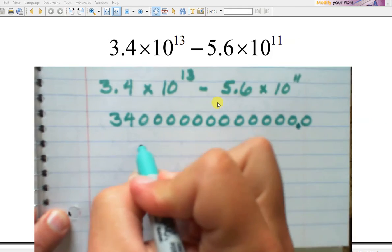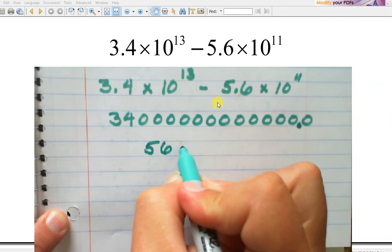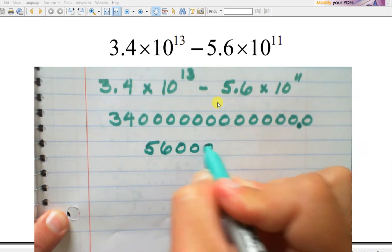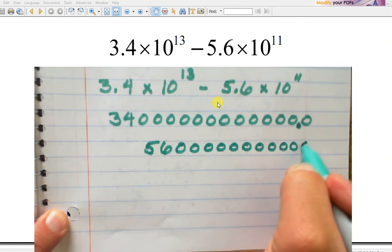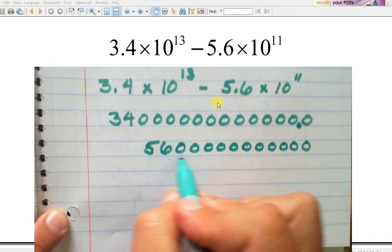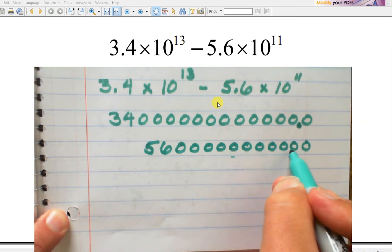I'm not even sure a calculator is going to be able to handle that. Minus 5.6 with 11 zeros. 1, 2, 3, 4, 5, 6, 7, 8, 9, 10, 11. With 11 jumps. 1, 2, 3, 4, 5, 6, 7, 8, 9, 10, 11 jumps.